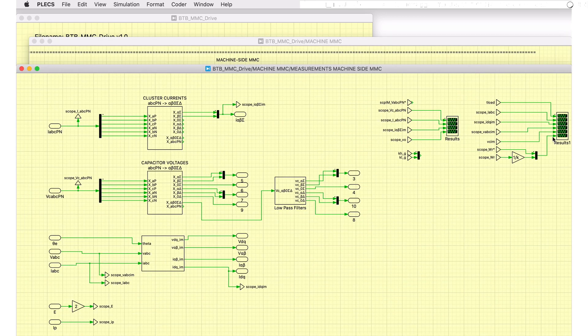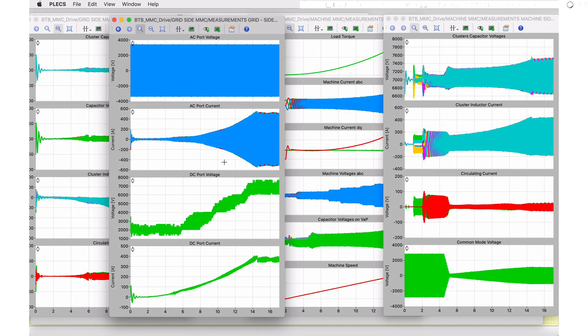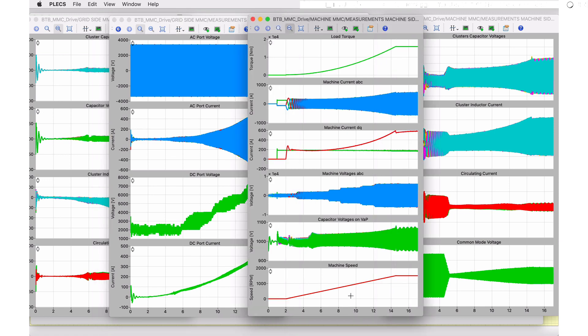Let's look at the simulation results. As can be observed from this plot here, the DC port voltage is dynamic and depends on the machine speed.